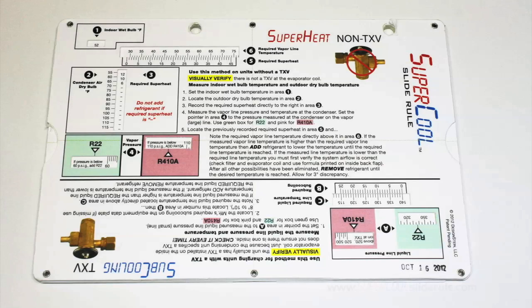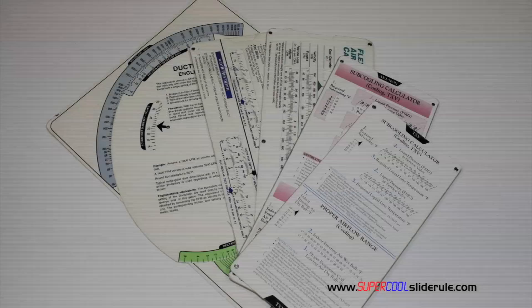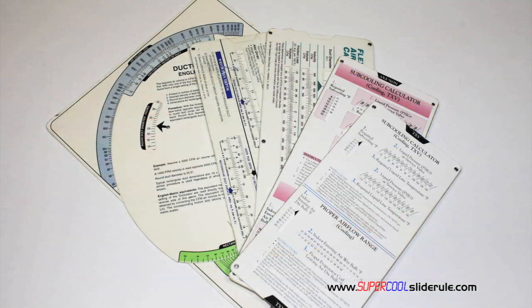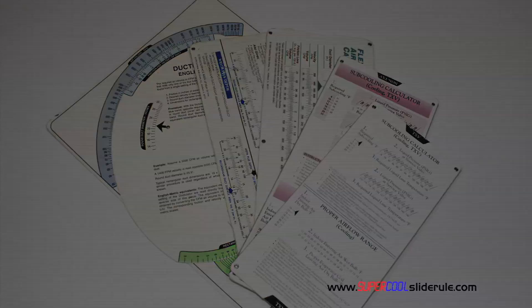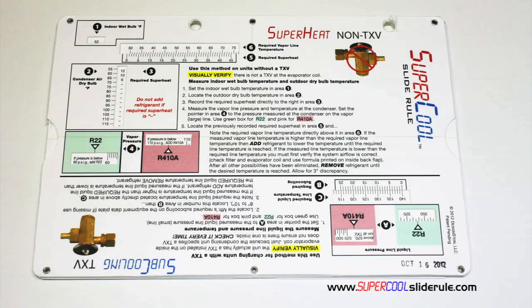Hello. I'd like to take a minute to introduce you to the coolest tool in the HVAC industry. Historically, technicians have carried four or five different slide rules — one for R22, one for R410A, one for metal duct sizing, one for flexible duct sizing, and yet others for diagnostics or troubleshooting. Thankfully, those days are gone.